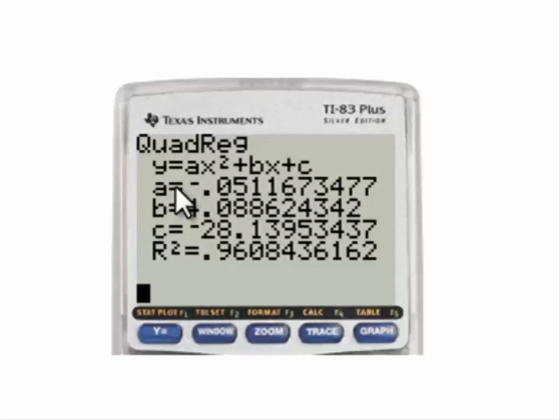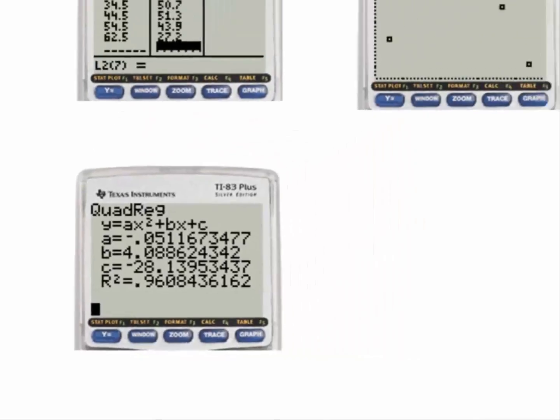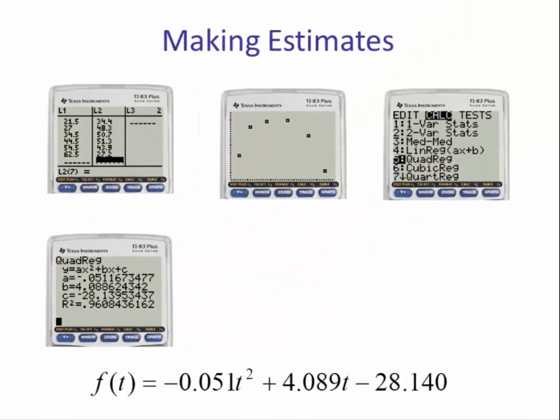Here we have the values a, b, and c. We also have r squared, which is about 0.96. So our function will be f of t equals negative 0.051 t squared plus 4.089 t minus 28.140, rounded to three decimal places.